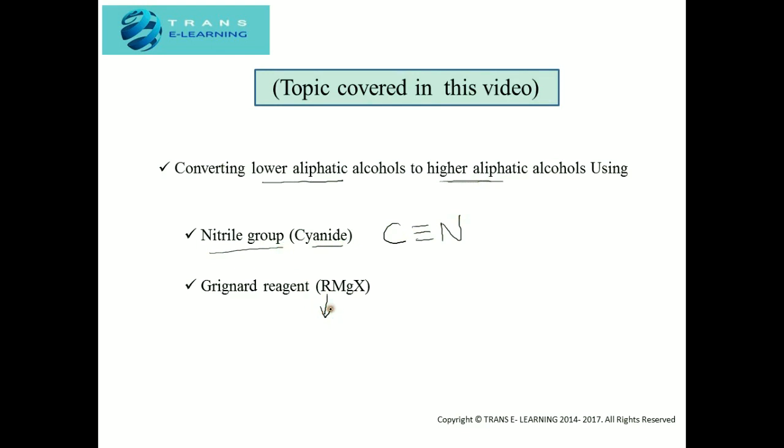Here R represents the alkyl group, Mg is magnesium, and X represents halogen. So let's start.